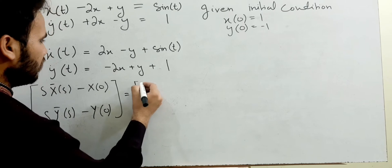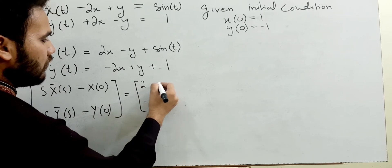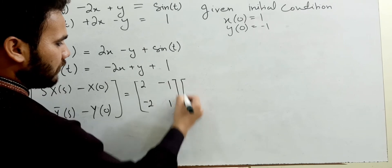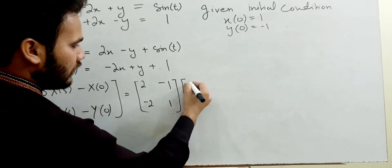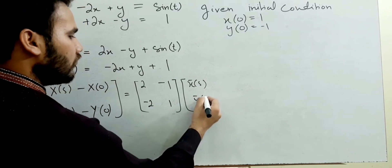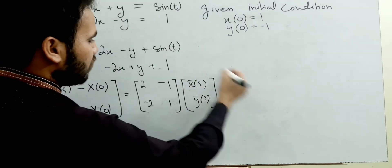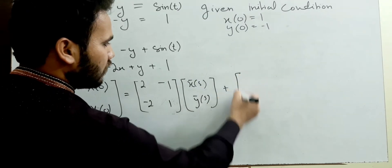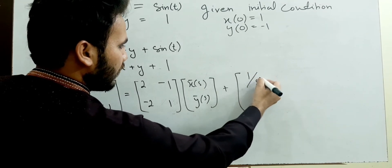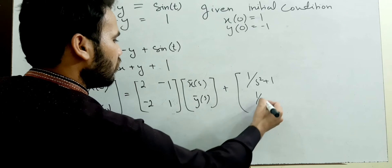The coefficient matrix is a constant matrix, so we can take it outside: [2, -1; -2, 1] times [X̄(s); Ȳ(s)]. Plus, Laplace of sin t equals 1/(s²+1), and Laplace of 1 is 1/s.